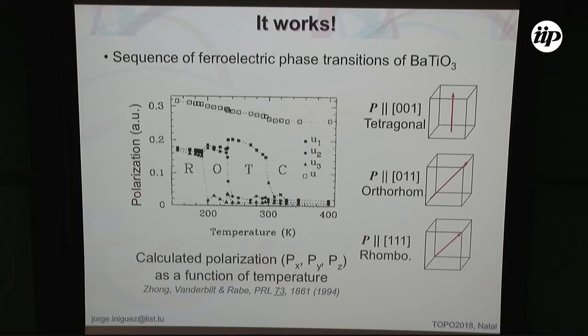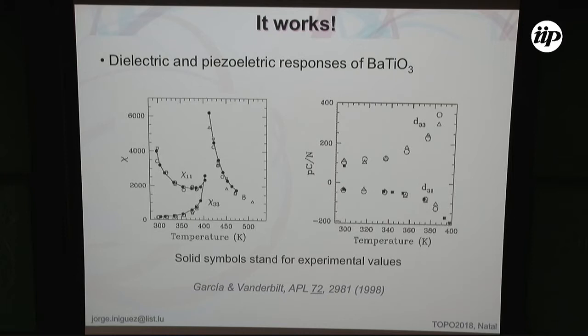With all parameters computed ab initio — no experimental information — you have the beautiful sequence of ferroelectric transitions of barium titanate perfectly reproduced. At high temperatures, the average polarization is zero in every direction. At some point one component becomes nonzero: the tetragonal phase. Cooling further, the second component becomes nonzero and equal to the first — the orthorhombic structure. Eventually all three become equal and nonzero — the low-temperature rhombohedral phase. This is exactly what happens experimentally; the only catch is the transition temperatures are a bit off.